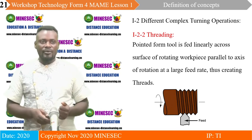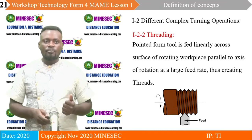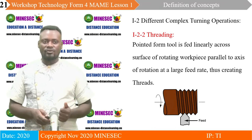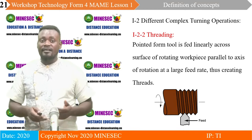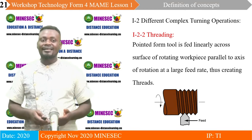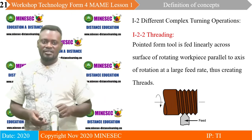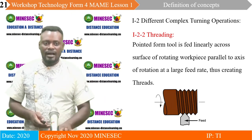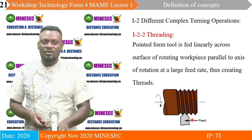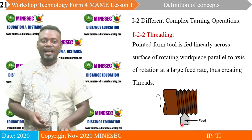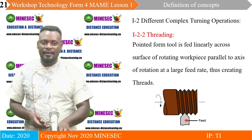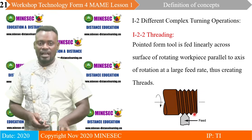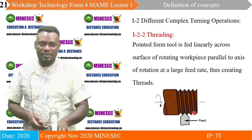The next point is threading. A pointed form tool is fed linearly across the surface of a rotating workpiece parallel to the axis of rotation at a large feed rate, thus creating threads. These threads are helicoidal ridges. The tool has the form of a V, just like the helicoidal ridges we see. If we have a square head, the ridges will equally be helicoidal, but the form of a square will be the end point of our workpiece.